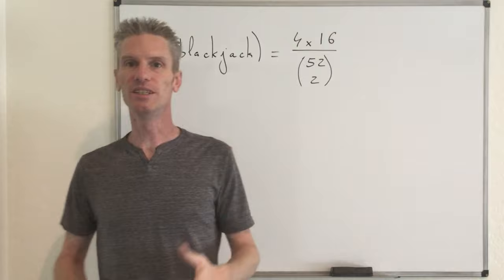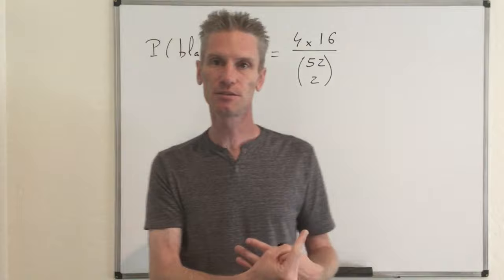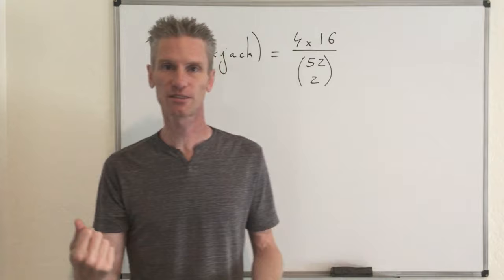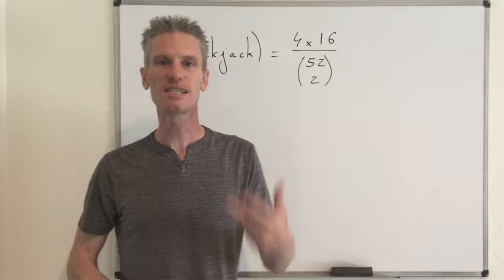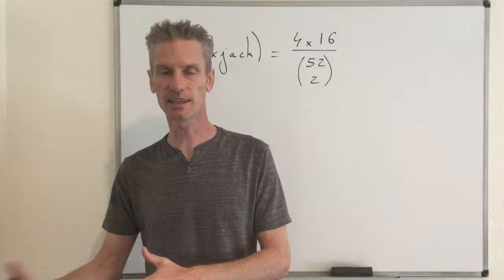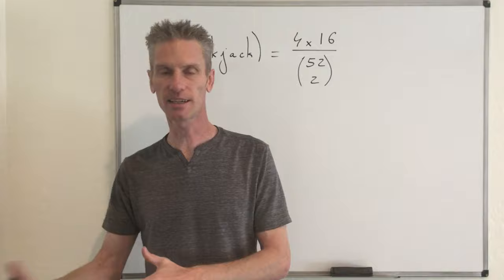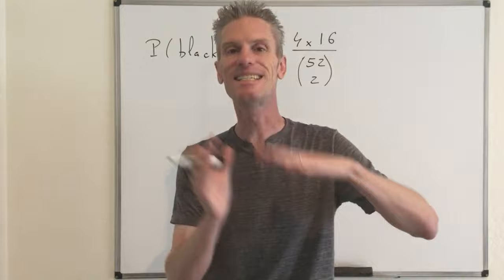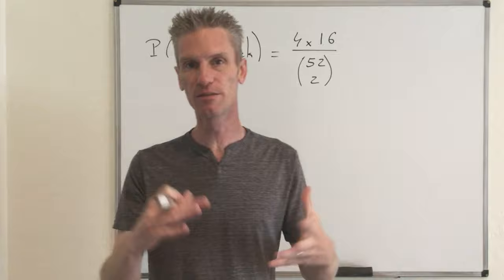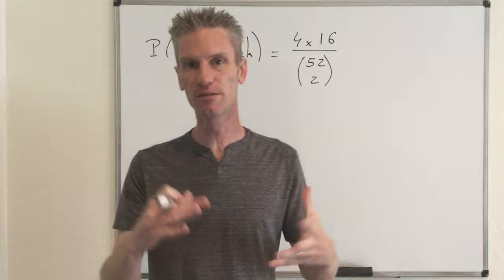Squaring would give the probability of not having a blackjack twice in a row if you put the cards back and reshuffled. Here things are different: you take two cards from a deck of 52, and then another two cards from the remaining 50. So it's not simply the square. Instead we introduce simpler elementary events: A1 is the event that player 1 has a blackjack, and A2 is the event that player 2 has a blackjack.